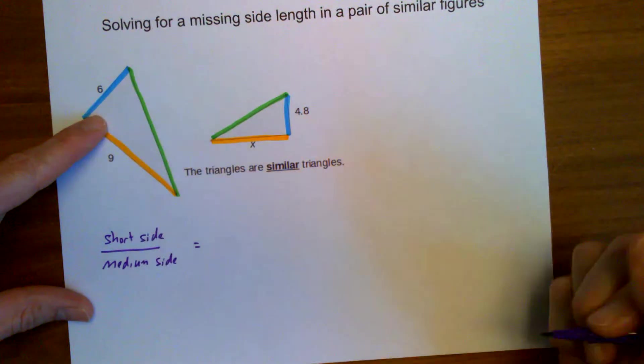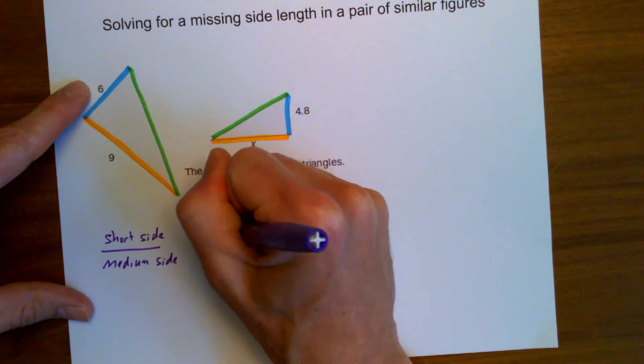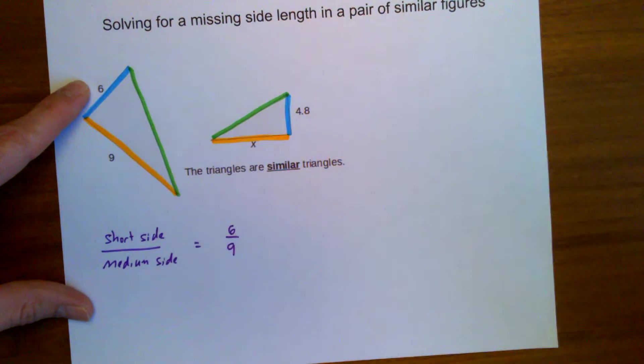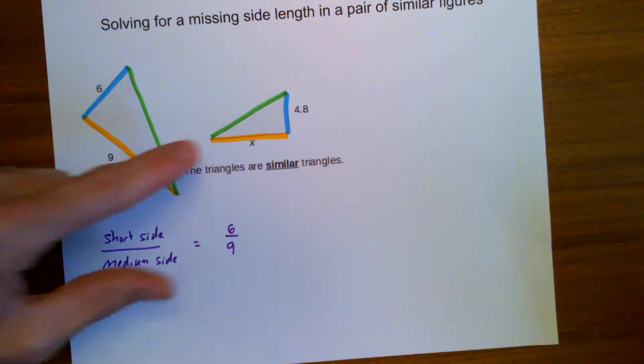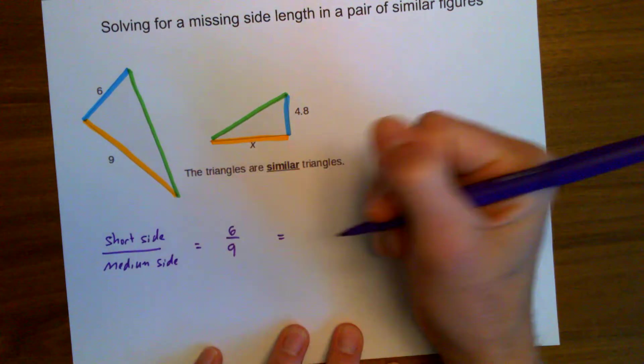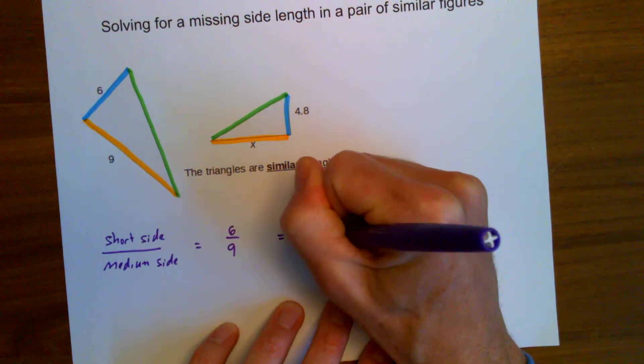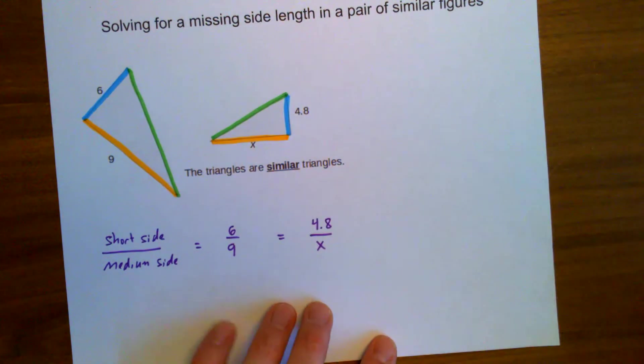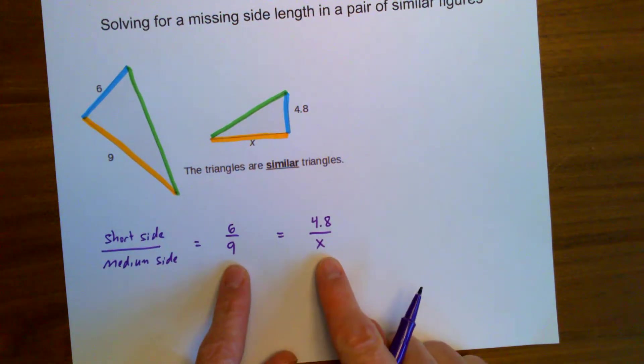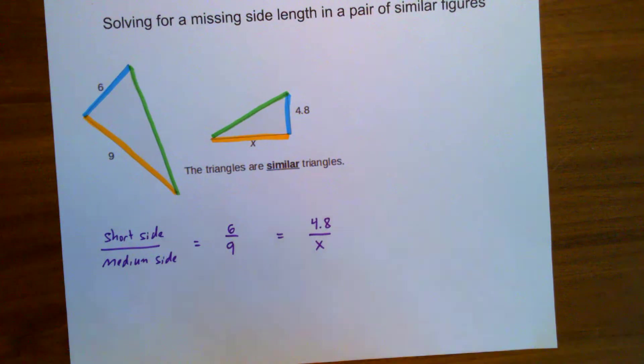That's my ratio that I'm going to write for each of these triangles. For the larger triangle, that ratio is 6 to 9. For the smaller triangle, that ratio is short side to medium side. That is 4.8 to unknown. These two ratios are the same. I need to figure out what this one is.